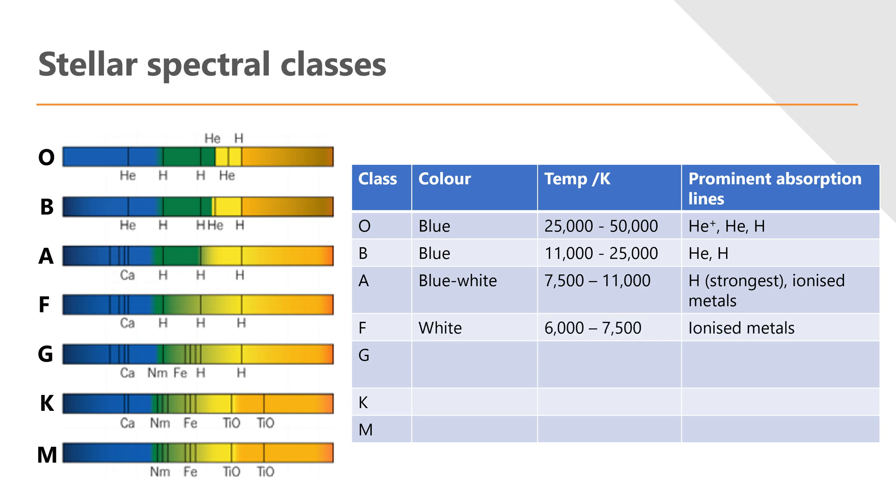Then we go down to our F class stars which are white, and they are mainly ionized metals. Then in our G class star we see ionized metals and then we start to see some neutral metals. We're now getting down to a temperature where the electrons are not being stripped away.